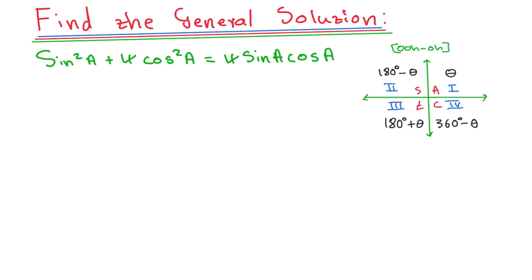We have sin squared A plus 4 cos squared A equals to 4 sin A cos A. You can see now we have sin and cos, guys. So this is going to lead us to tan. But let's see which type of algebra we're going to apply. So I will transpose the one on my right-hand side to the left-hand side, okay? So let's see.